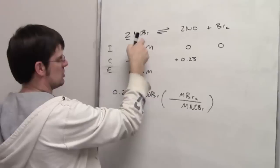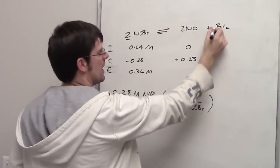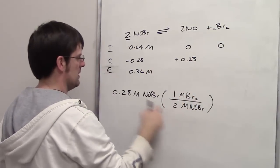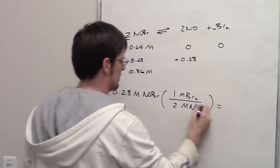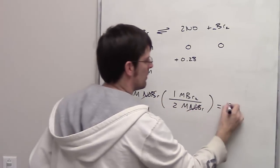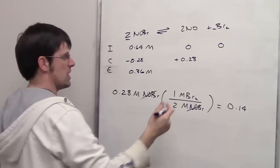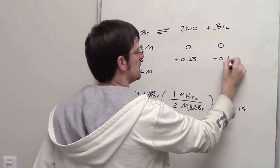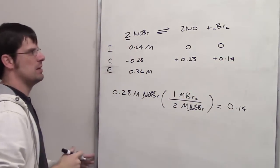Now I look at the coefficients. I've got a 2 in front of my NOBr and I've got a 1 in front of my bromine. So this is going to come out to be 0.14 as my change in the molar equivalents of bromine, Br2.